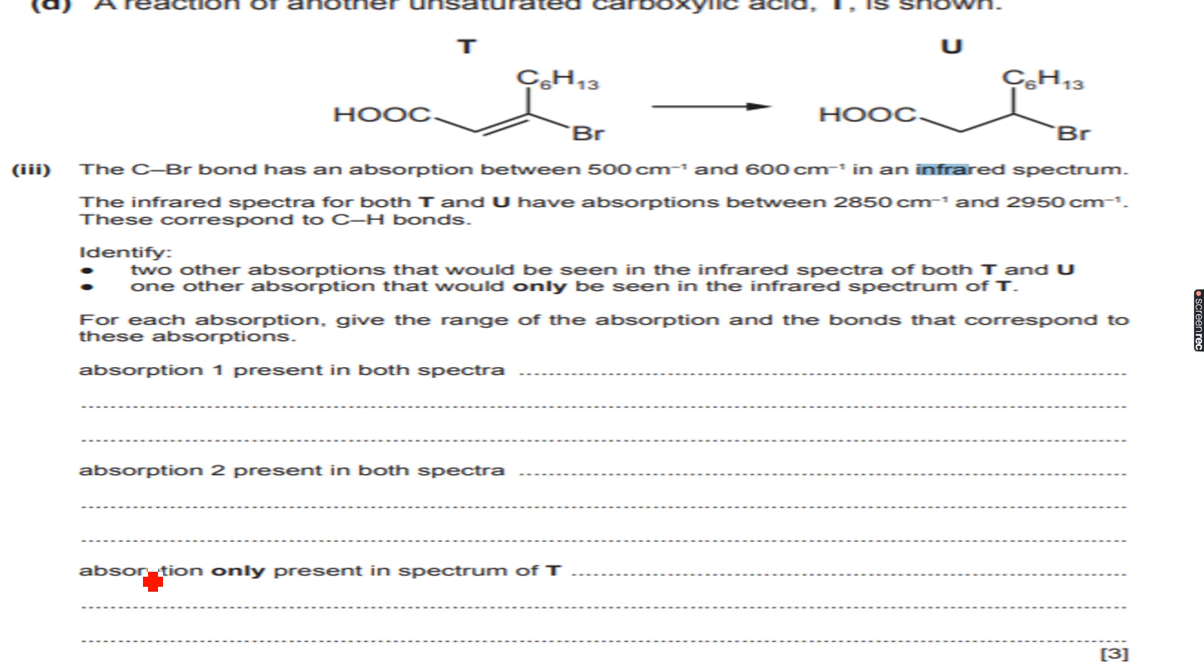I think this is the last question, a reaction of another unsaturated carboxylic acid T is shown. So this is an unsaturated carboxylic acid T. It's unsaturated because of this carbon double bond over here and U, so this is U. So this is T and U.